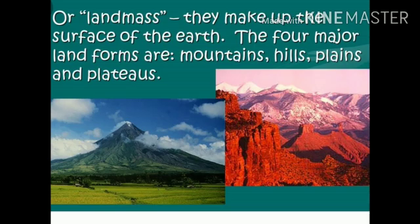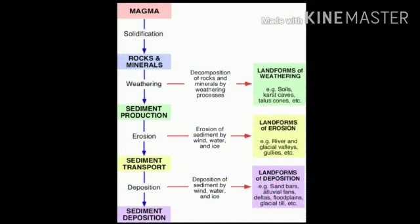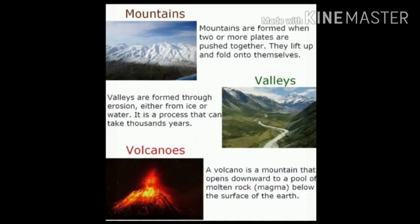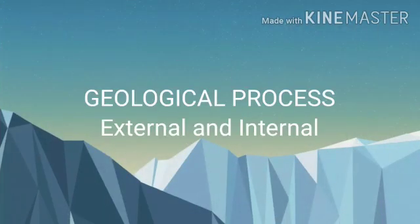Now, how are landforms formed? Landforms are formed due to weathering, river elevation, sinking, and erosion of the soil. These processes constantly shape the surface of the earth. This doesn't happen overnight — we are able to notice these changes only over thousands and hundreds of years.